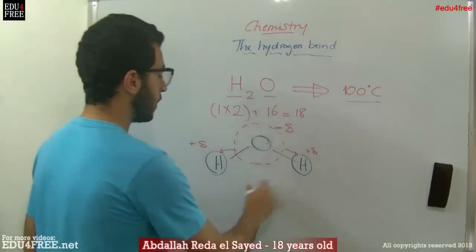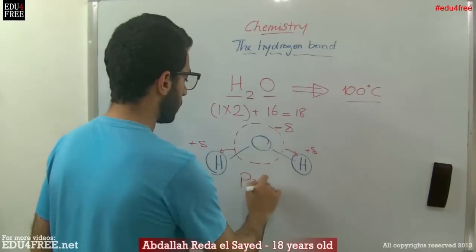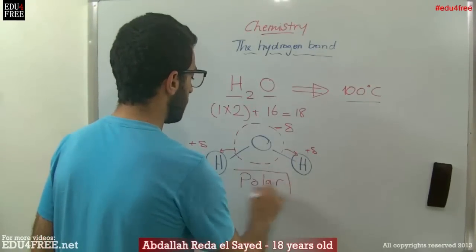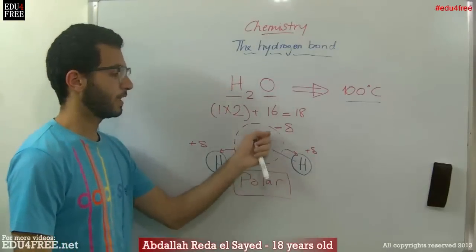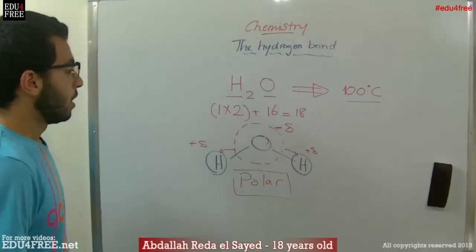Now in this case this molecule is called a polar molecule, because it contains poles: positive poles and a negative pole.